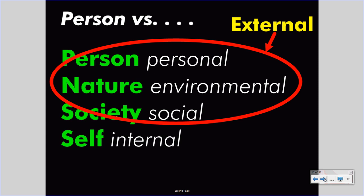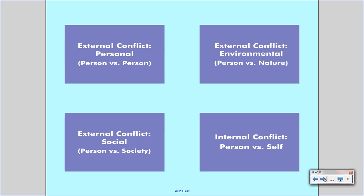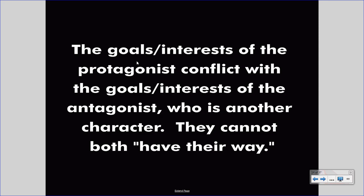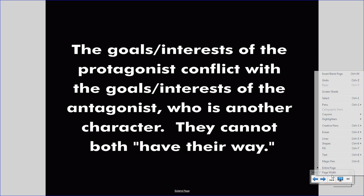Let's take a look more clearly at the definitions of each of these four types of conflict: personal, environmental, social, and internal. Starting with person versus person — the personal conflict. In this conflict, the goals or interests of the protagonist conflict with the goals or interests of the antagonist, who is another character. They cannot both have their way. This definition contains a lot of words, but let's look at what's important.